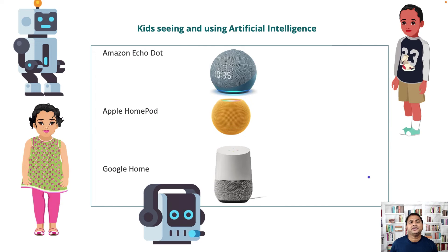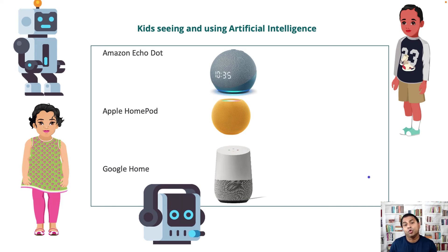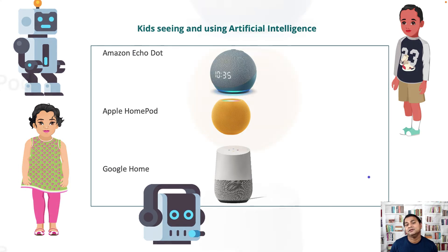Where are kids seeing and using AI in today's world? Nowadays most homes have Amazon Alexa, Google Home, or Apple HomePod. Kids are playing with these devices, asking so many questions, and getting answers at their fingertips. If you tell them they can also make one on their own, their eyebrows go up and they say, 'Really, can I make one like this?' Yes — I've said many times to kids, you can also make one of these things if you learn AI and machine learning.